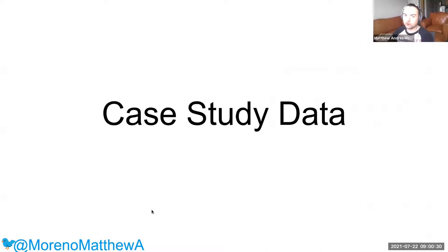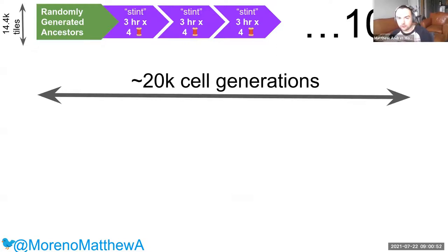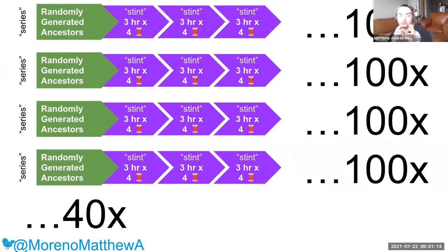Just a little bit about where we got the data from that we analyzed in this case study. We started out with a toroidal grid with 14,000 tiles. We seeded it with randomly generated ancestors, and then we ran it for three hours of wall time. And then we serialized the population to file and then loaded it up for another subsequent three hour session, continuing onwards. We refer to each three hour session as a stint. And so the evolution is progressing stint upon stint, going from stint zero all the way up to stint 100. Just as a sense of scale, running with four threads, this was sufficient to observe about 20,000 cell generations over the course of the simulation. We performed 40 replicates of these evolutionary runs, and we selected the case study from one of them.